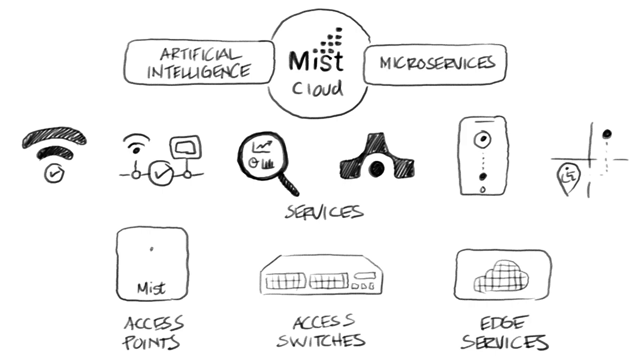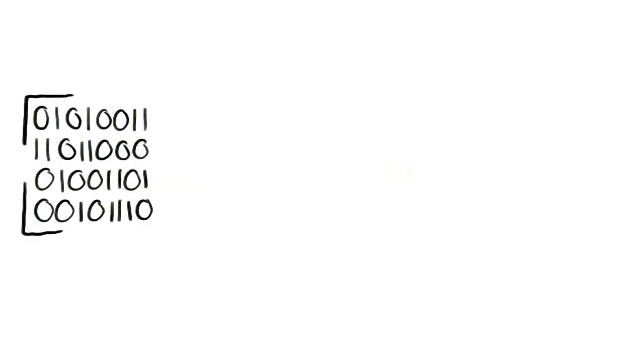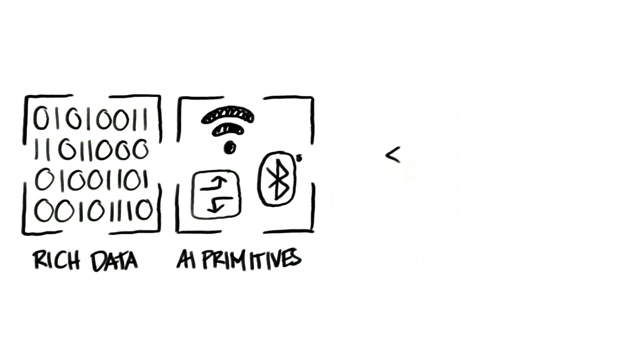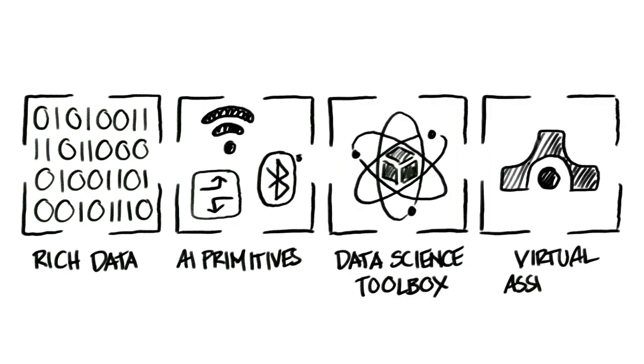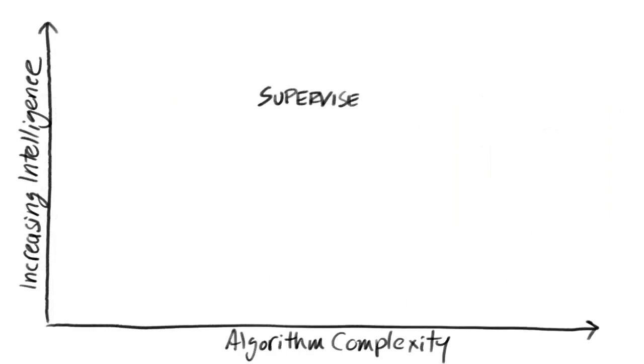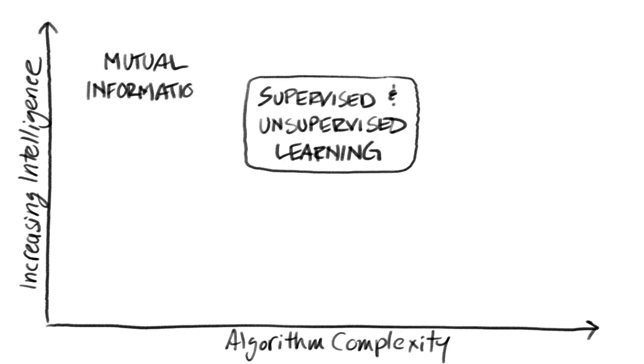As you learn more about the AI technology used by Juniper Mist, you'll see that the journey to an AI-driven network requires rich data, AI primitives, a well-stocked data science toolbox, and a virtual assistant. All of these components are required as the network evolves to become self-driving.